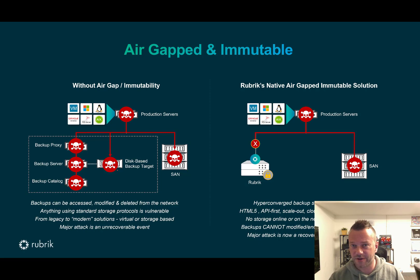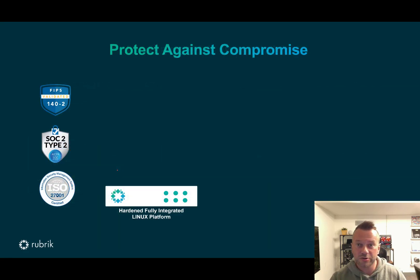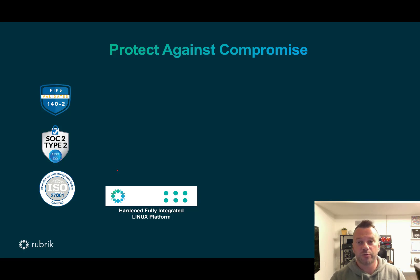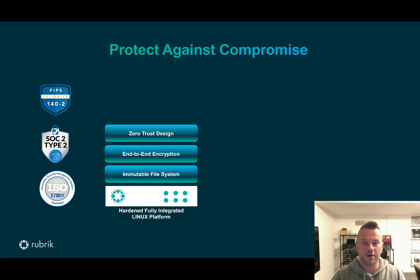Rubrik must still have an interface and operating system — so what is on the network? Only the Rubrik interface and CLI over SSH. These are protected by a custom hardened build of Linux with all unnecessary services removed, constantly patched and maintained by Rubrik for end-to-end security. It builds on the immutable file system with end-to-end encryption using TLS 1.2 and a zero trust design, meaning there is no way an attacker can spoof a Rubrik node or intercept any traffic. It is a bunker in a box.